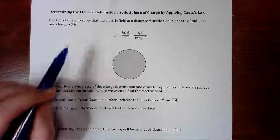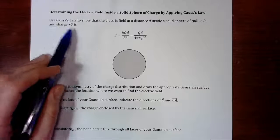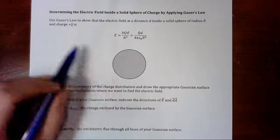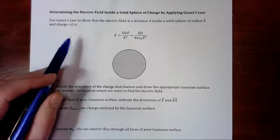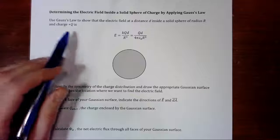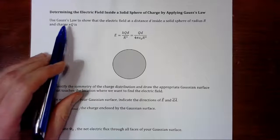You need to be able to do it both ways. On the AP it might specifically say to use Gauss's law. In that case you have to use Gauss's law to derive this. If it doesn't say, then you can go ahead and use the Shell Theorem if you'd like, or you can use Gauss's law, either one. But if it specifically says Gauss's law, you have to use Gauss's law.